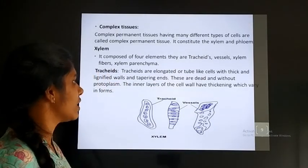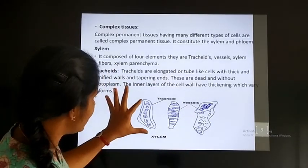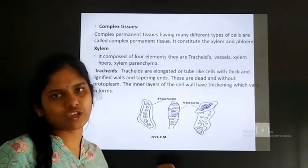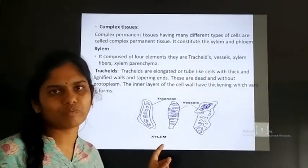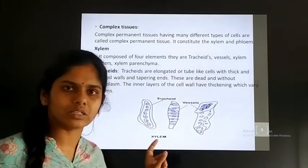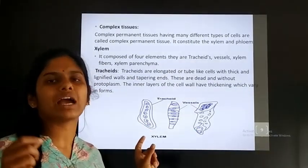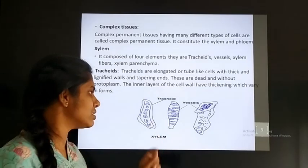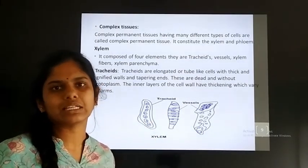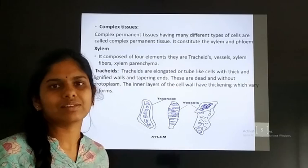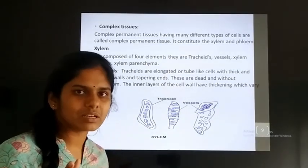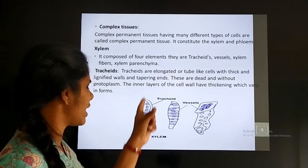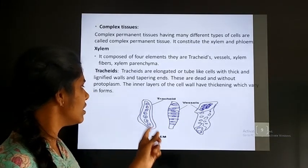First, that is tracheids. The tracheids are elongated, tube-like structures. The tracheid is a dead tissue, and it aids in the conduction of water. It also provides mechanical support to the plant. The tracheids have pointed, tapering ends, and the cell wall of the tracheids is a thick, lignified cell wall — meaning the cell wall is made up of lignin. The tapering, pointed ends are characteristic of tracheids.